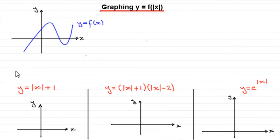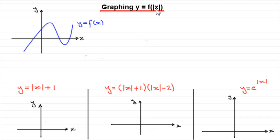Welcome to this tutorial on graphing y equals f of mod x. Suppose you have a curve — any curve — let's say it's y equals some function of x. When we have to sketch y equals f of mod x, that means we replace any x in the original equation with a modulus sign around the x. I'm assuming you're familiar with what the modulus sign does. If not, just go on my website, look under modulus functions, and you'll find tutorials on that.